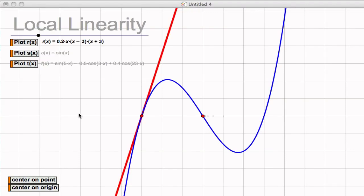Local linearity is a property of differentiable functions, and what local linearity refers to is the idea that a curve behaves like its tangent line on some small interval.